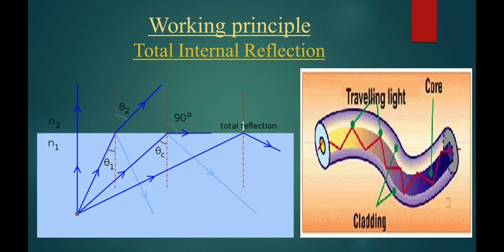Then here we study working principle of optical fiber. Optical fiber is working on principle of total internal reflection. When a ray of light travels from a denser to a rarer medium such that the angle of incident is greater than the critical angle, they reflect back into the same medium. This phenomena is called total internal reflection.